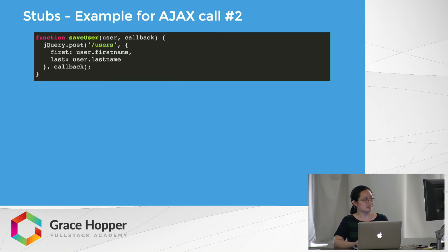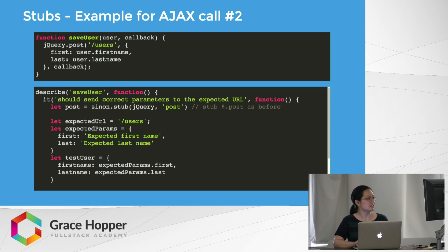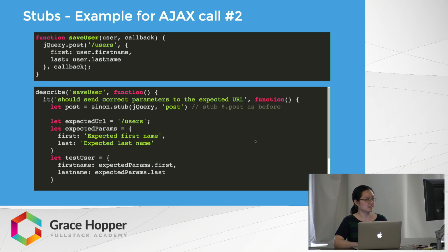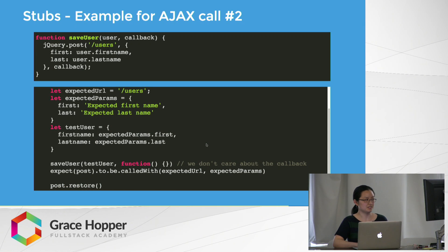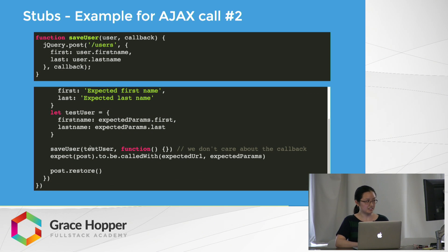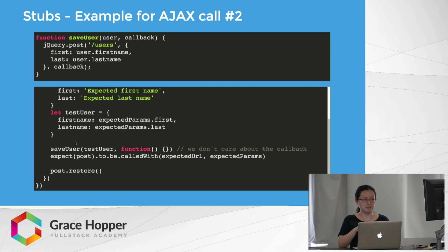Another example with stubs uses the same saveUser function, but checks whether saveUser sends the correct parameters to the expected URL — this is a bit more complicated. We have the same stub as before, with the expected URL /users and expected parameters with first and last name. We call saveUser with the test user, providing a callback because saveUser expects one, but we don't care about its contents. Then we expect post to be called with the expected URL and expected params, and we remember to always restore the stub.